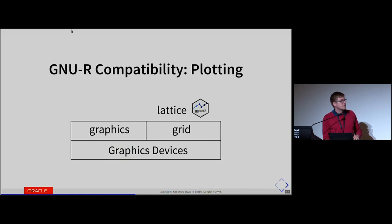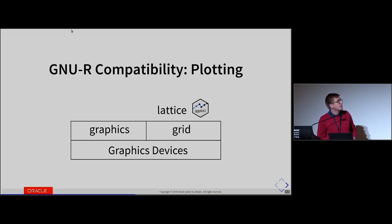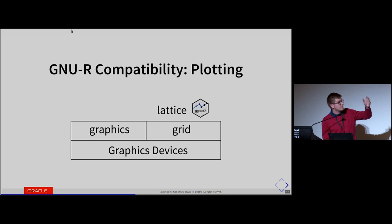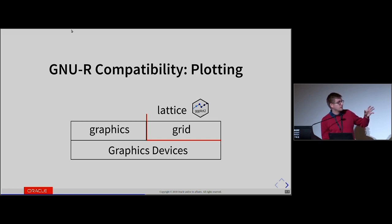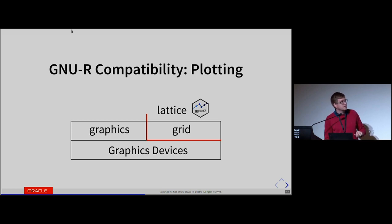One thing we got asked a lot in the past is support for plotting or graphical output. Looking at the architecture of GnuR and various graphics packages, we decided to implement the grid package in FastR. Given that we implement the grid package, you can run lattice and ggplot2 on FastR — we think those are the important packages. We will implement the graphics package in the future.